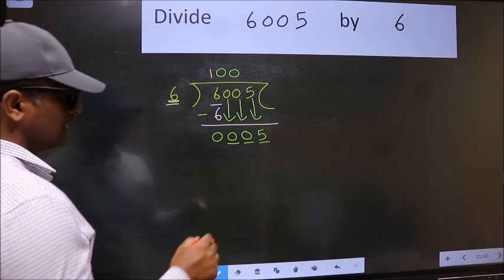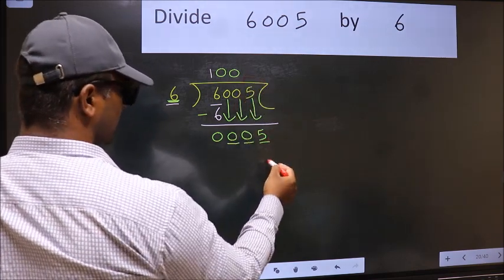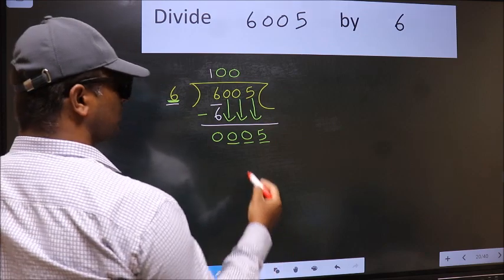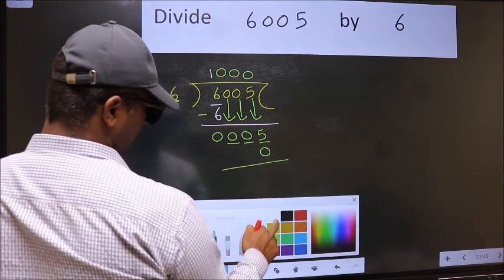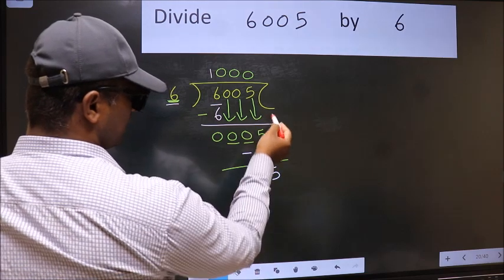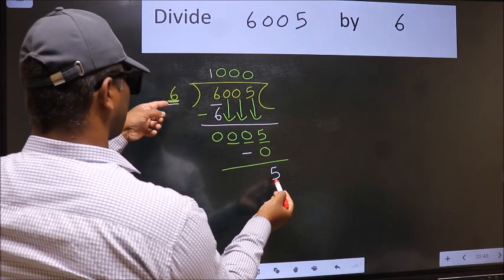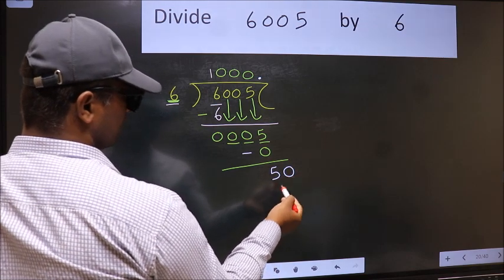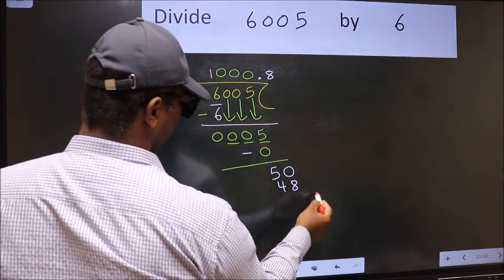Instead, what you should think of doing is: which number should we take here? If I take 1, we will get 6, but 6 is larger than 5. So, what we should do is take 0. So, 6 into 0 is 0. Now we should subtract. 5 minus 0 is 5. Over here, we did not bring any number down, and 5 is smaller than 6. So, now we can put dot and take 0. So, 50. A number close to 50 in the 6 table is 6 × 8 = 48.